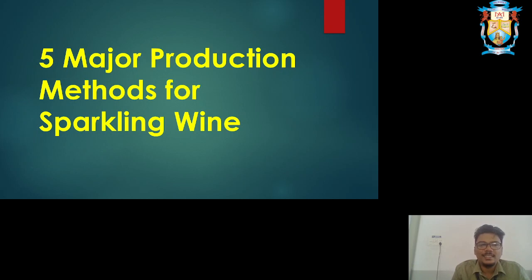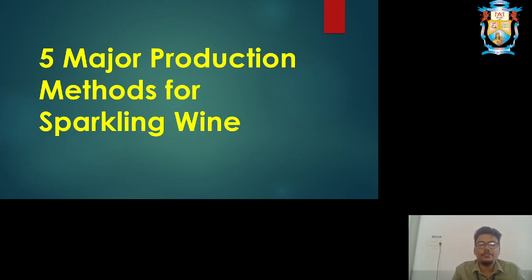My name is Akiliti from the Department of Hospitality Designs and today we are going to study about a particular chapter from wine. We are going to study the five major production methods of sparkling wine. Different types of wines are studied — portable wines like red wine, rose wine, and white wine — and then another categorization known as sparkling, fortified, and aromatized. These are the major classifications.